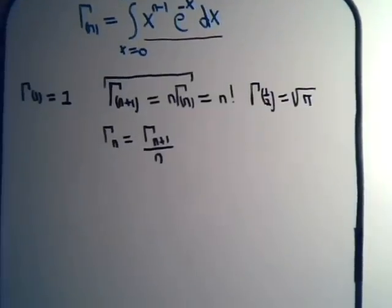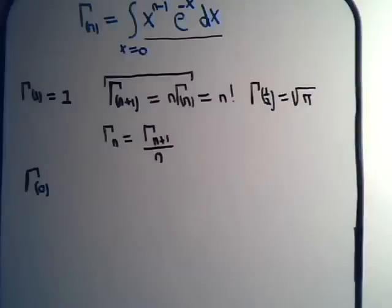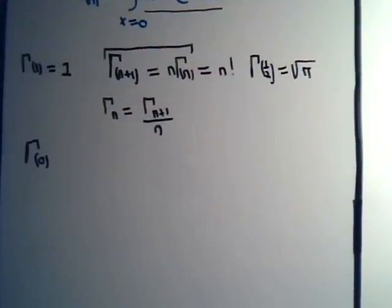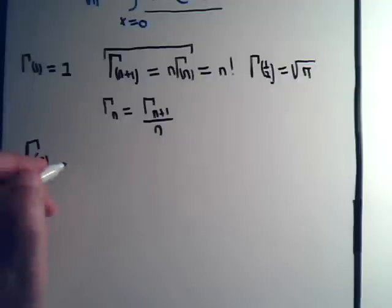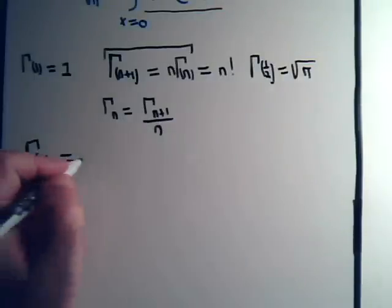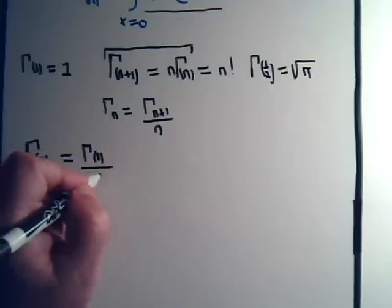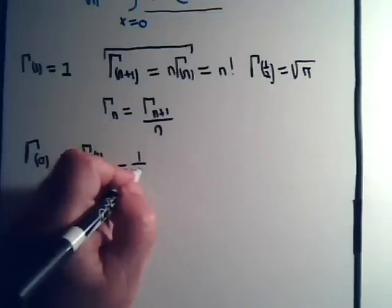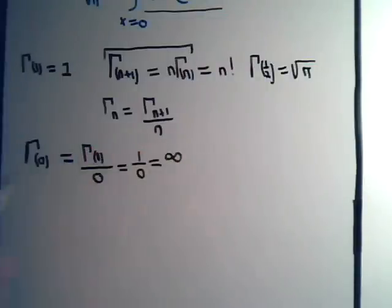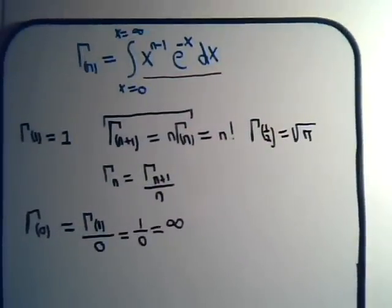For example, we might ask ourselves: what would the gamma function of 0 be equal to? Using this formula, with n equal to 0, that would equal the gamma function of 1 divided by 0, which equals 1 over 0. That's infinity.